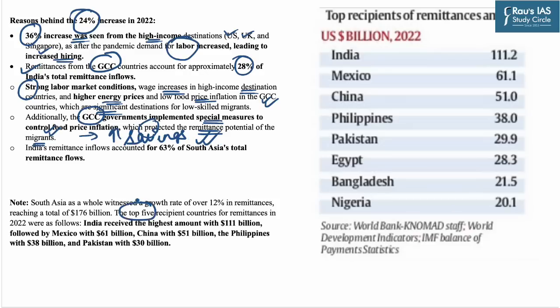The top five recipient countries for remittances in 2022 were India, Mexico, China, Philippines, and Pakistan.